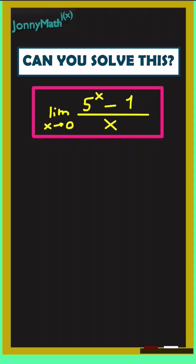If we plug x equals 0 in this limit, we get the indeterminate form 0 over 0. So we can apply L'Hôpital's rule.